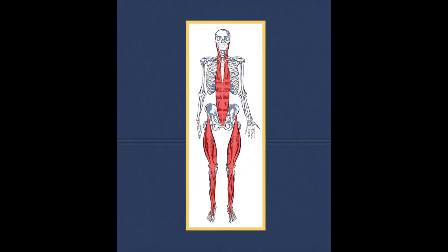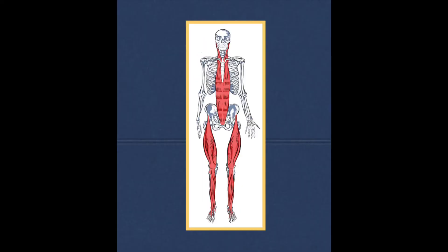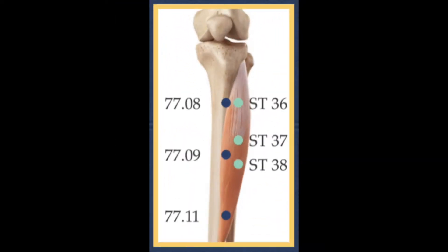The superficial front line includes the tibialis anterior, where these points are located, as well as the quads. Here we see the tibialis anterior muscle. Stomach 36 and stomach 37 are going to be in this muscle. On this superficial front line we can also see that it includes the rectus abdominis and the sternal fascia. So these points are going to have an effect on the stomach meridian and the superficial front line.